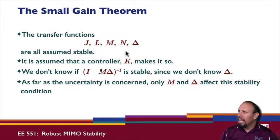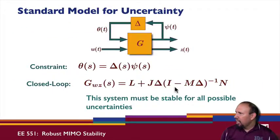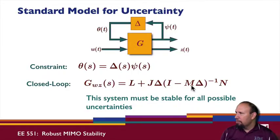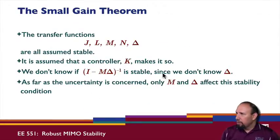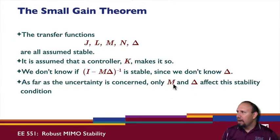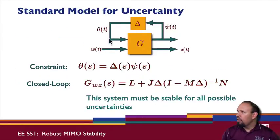Assuming all those are stable — and there's some controller embedded that makes J, K, L, and M stable — what we don't know is whether this inverse quantity is stable. M is stable and Δ is stable, but we can't know if the inverse quantity is stable because we don't know Δ. As far as robust stability is concerned, only M and Δ affect the stability condition. All other quantities are stable, so the only thing we need to concern ourselves with is this inverse term.